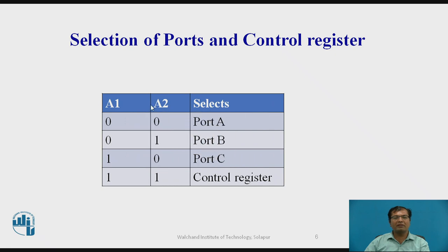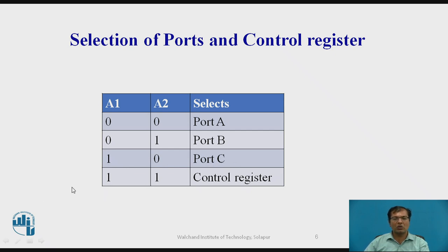Moving to the next topic, which talks about the selection of ports. Since we saw three ports — port A, port B, and port C — along with one control register, all four selections are carried out by pins A1 and A0 with respective values: 0-0 for port A, 0-1 for port B, 1-0 for port C, and 1-1 for the control register.